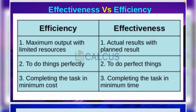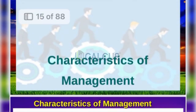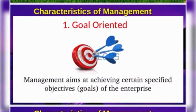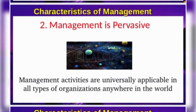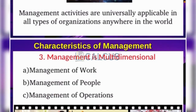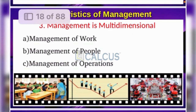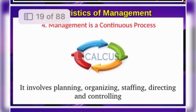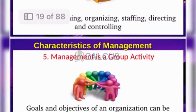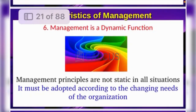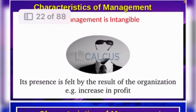The most important thing is the management characteristics. The management characteristics are: goal oriented, management is pervasive, management is multidimensional — covering work, people, and operations — management is a continuous process, management is a group activity, management is a dynamic function, and management is intangible.